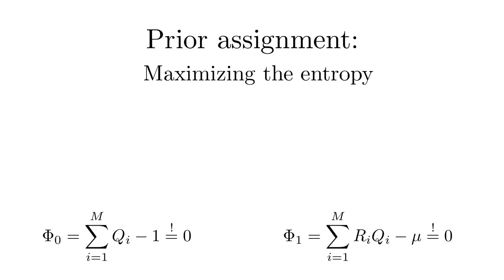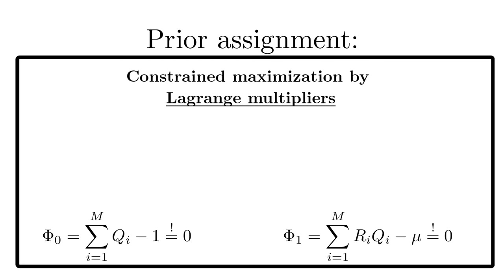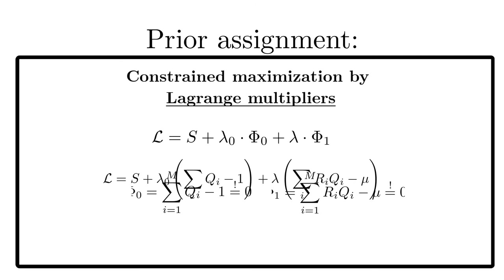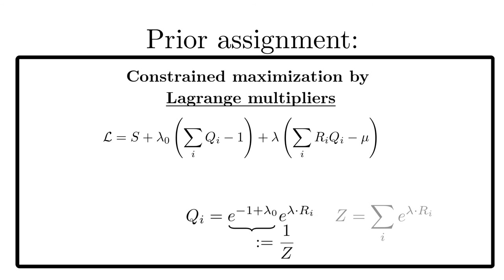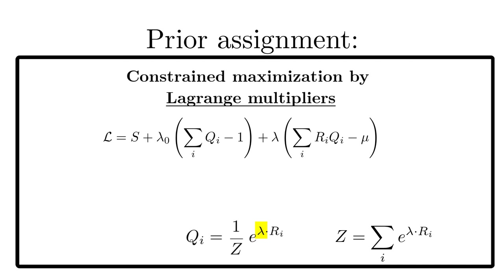Constrained maximization can be achieved most elegantly by the method of Lagrange multiplier. We define the so-called Lagrangian. The maximization condition is that the derivative with respect to the probabilities vanishes. The derivative can be computed easily and we obtain an exponential expression for the probabilities. The normalization Z follows readily. The second Lagrange parameter, lambda, follows from the second constraint.